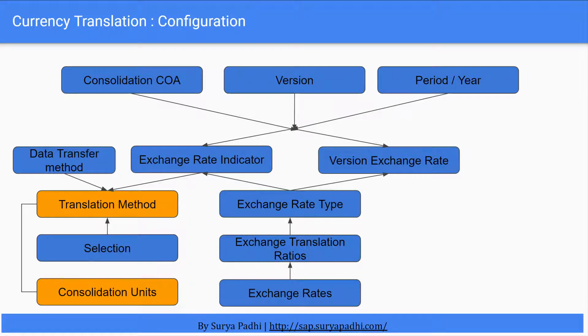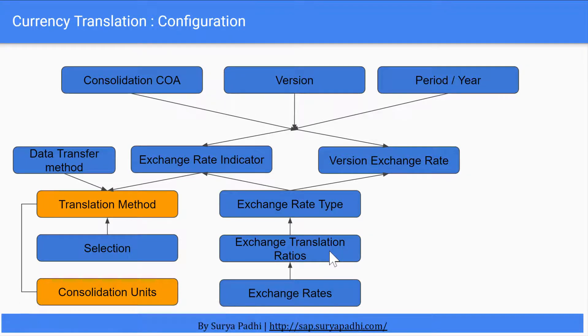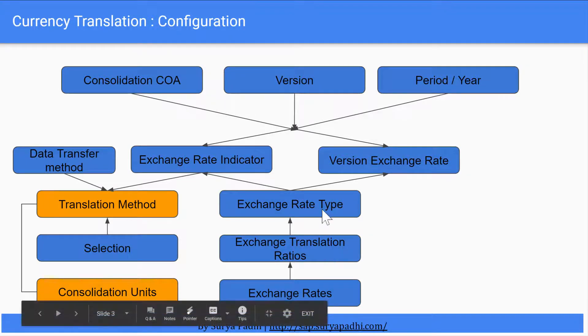Step one: the first three steps are exchange rate, exchange rate translation ratios, and exchange rate type. These are very common in ECC.